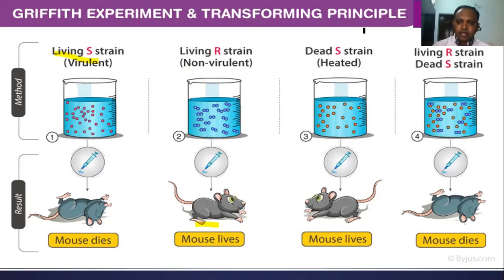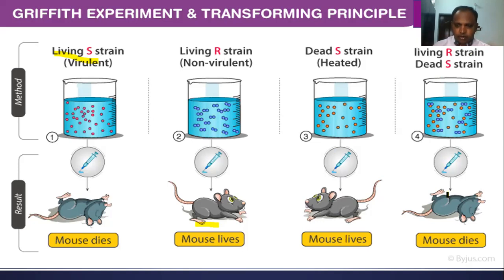He heat-killed the S strain and injected that heat-killed compound into mice — the mice survived because there was no infection. Then he mixed the living R strain with the dead or heat-killed component of S strain and injected both into mice — the mice died of pneumonia. From the dead body he did an autopsy and isolated the live S strain, not the live R strain, even though he had only injected live R strain.